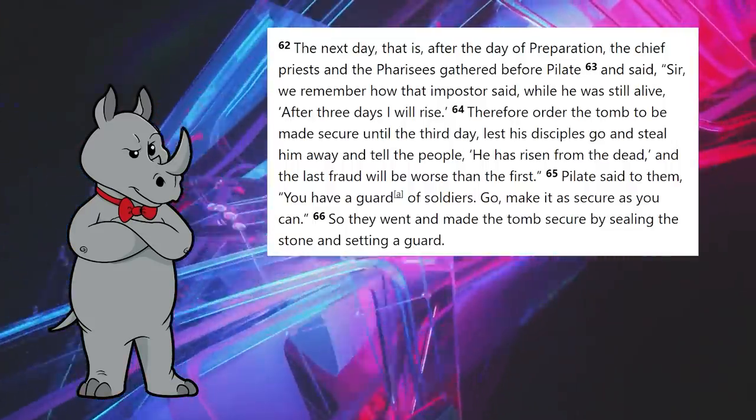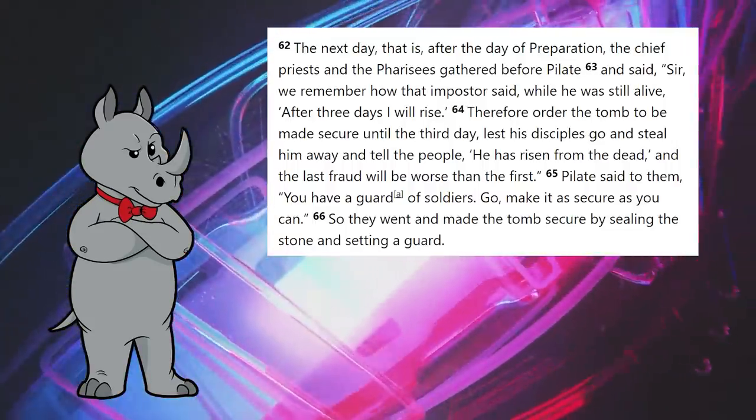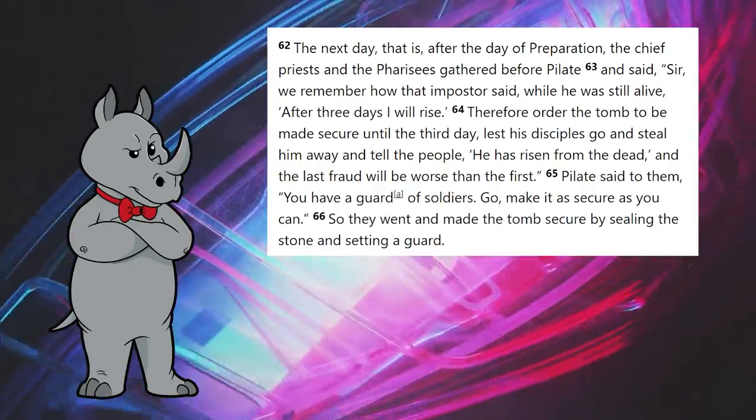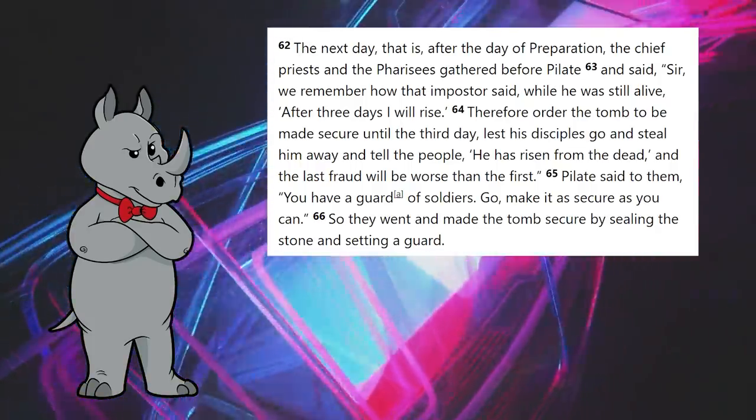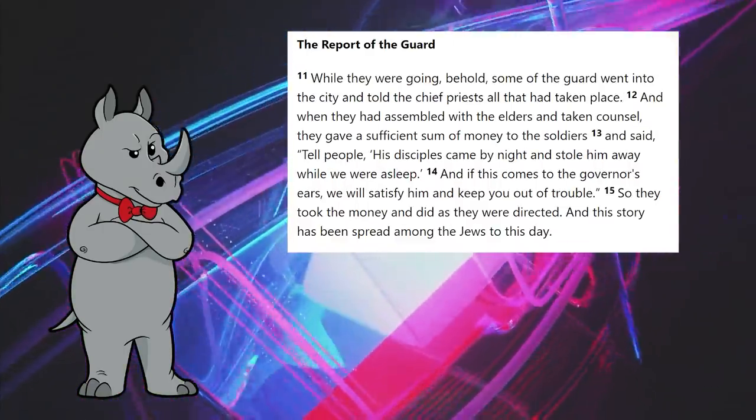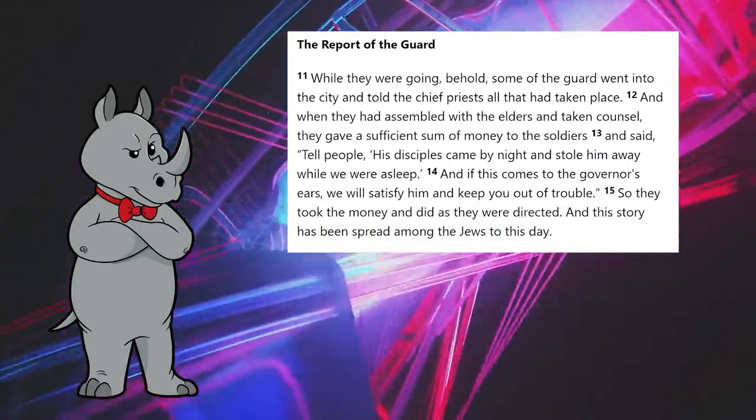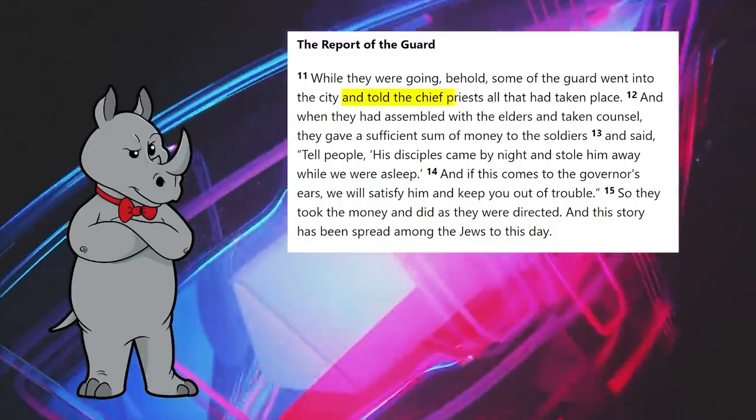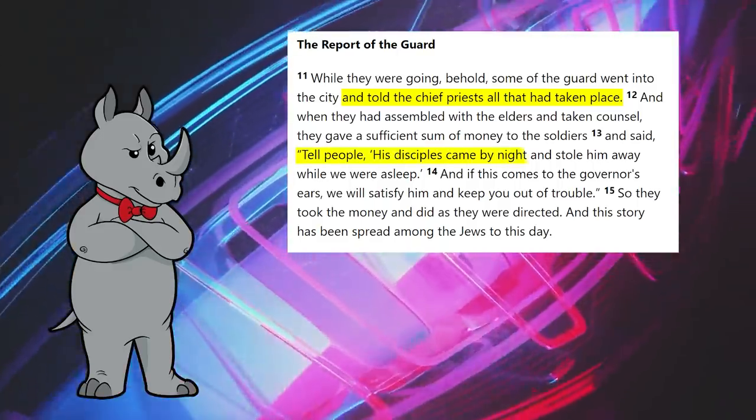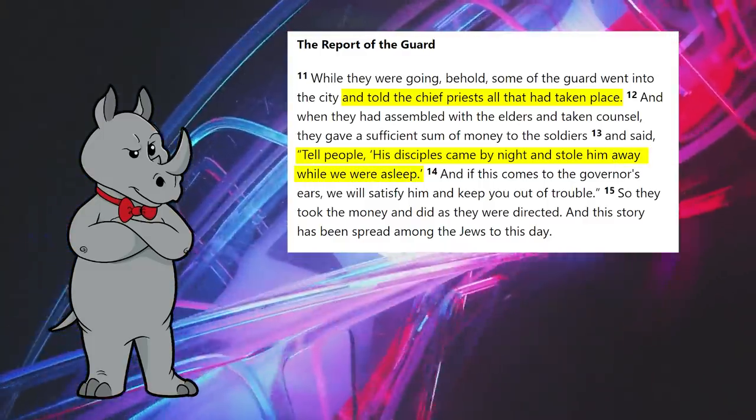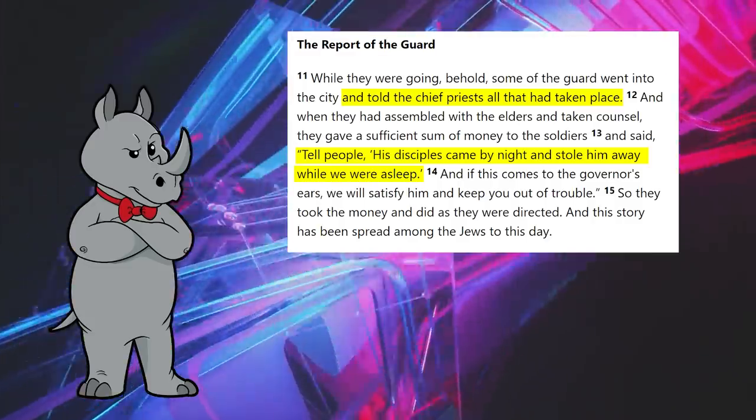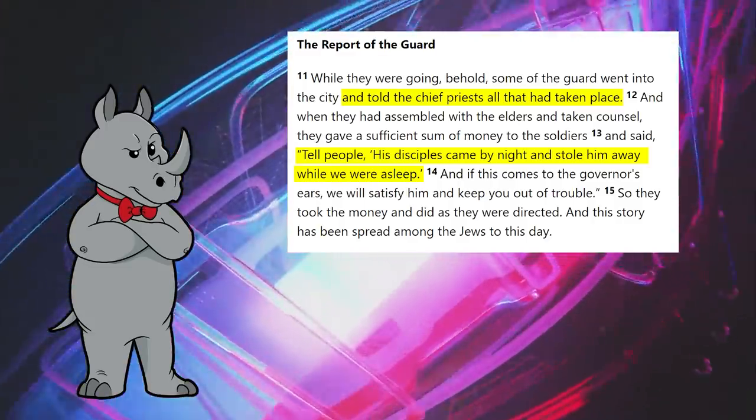A straight reading of Matthew 27:62-66 leads us to believe that this is a Roman guard. The priests go to Pilate and ask him for a guard. He says, you have a guard, and then they go and guard the tomb. But when we get to the events following the resurrection, for some reason, this guard, thought to be Roman, reports back to the chief priests rather than to Pilate. And these chief priests then tell them to lie to Pilate about what happened at the tomb. Moreover, the lie is that they fell asleep while on duty. So if they were a Roman guard, this is punishable by execution.